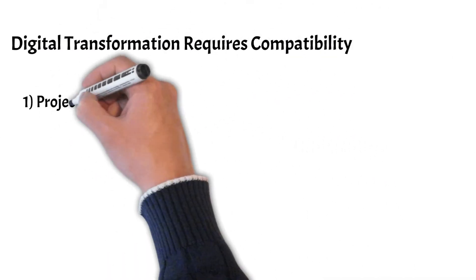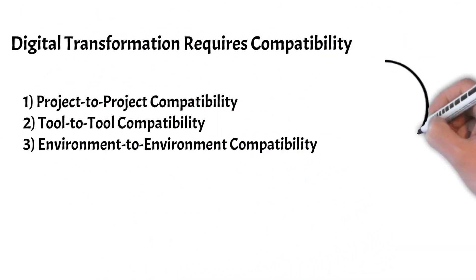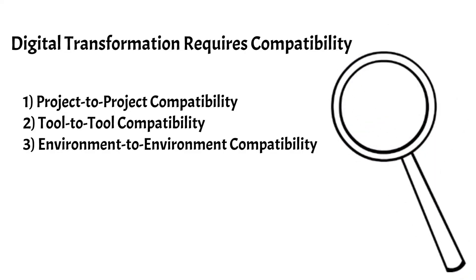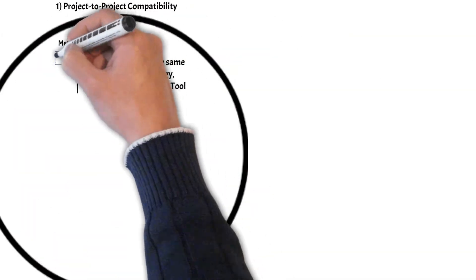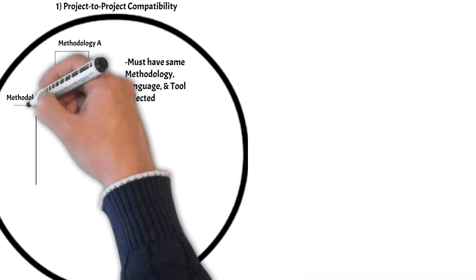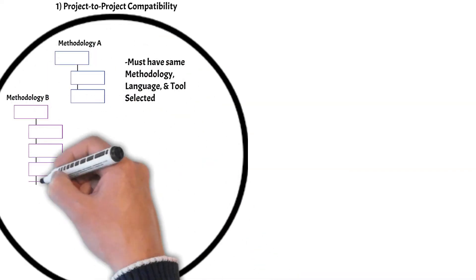There are three levels of compatibility which need to occur for a successful digital transformation to be possible. Let's look at each in more detail. First and most granular in scope is project-to-project compatibility. This includes the ability for different projects within a single tool to connect and operate seamlessly.